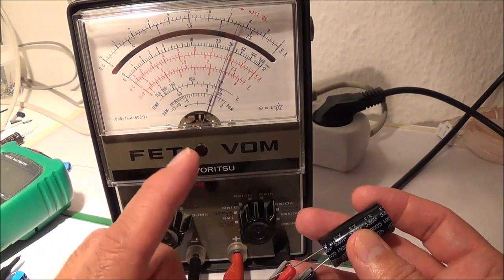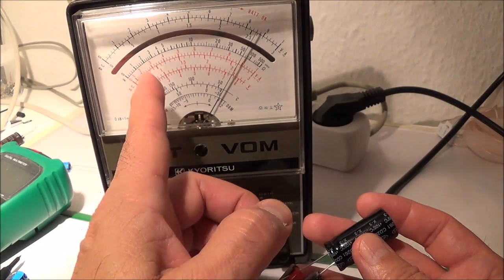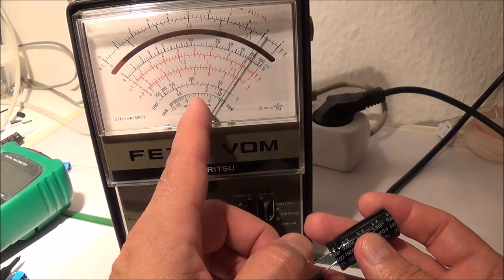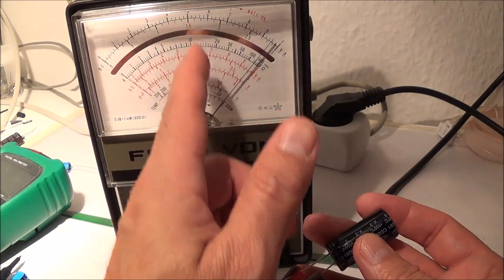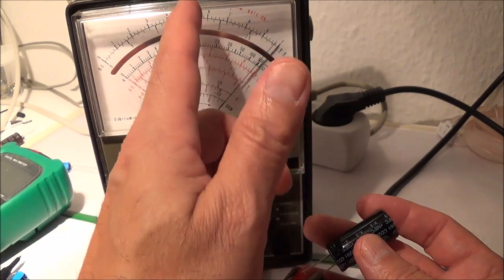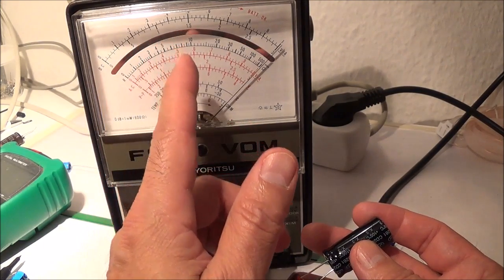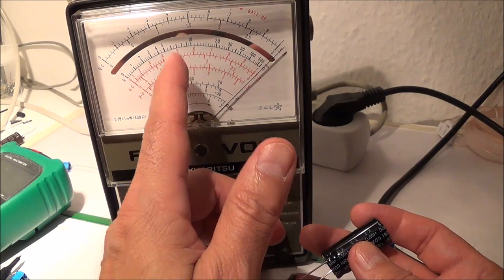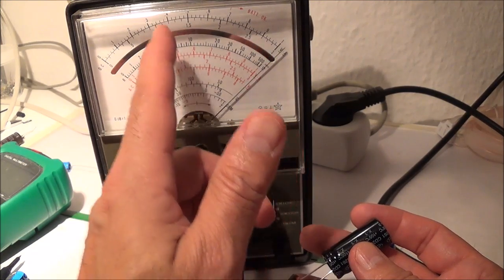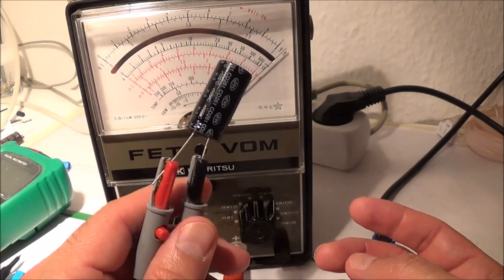Now it should go all the way to the right and then stay there. If for example it went down and it stayed like halfway up the middle, you might have a problem with leakage. Say it will stay at for example 50 or 50,000 ohms or something like that. So I can reasonably conclude that this capacitor is okay.